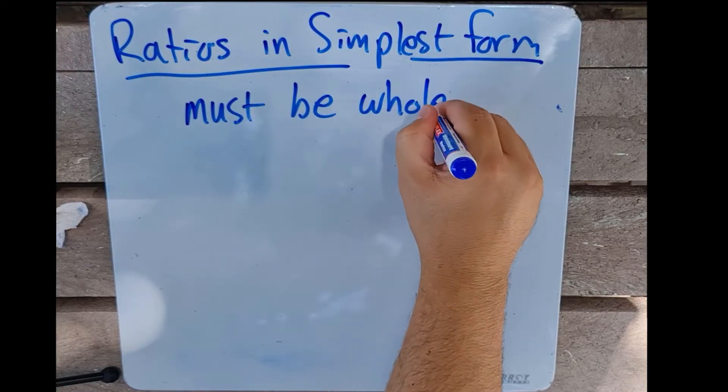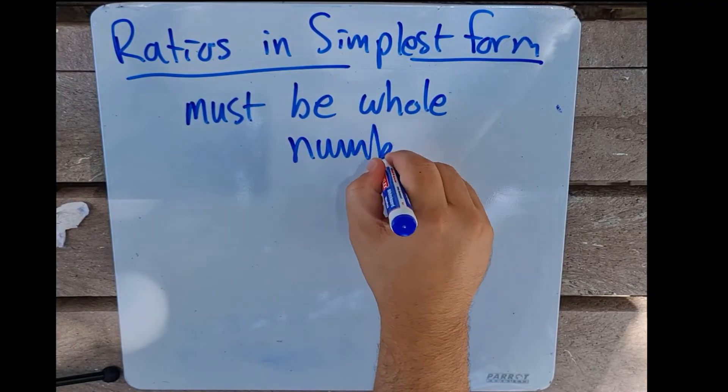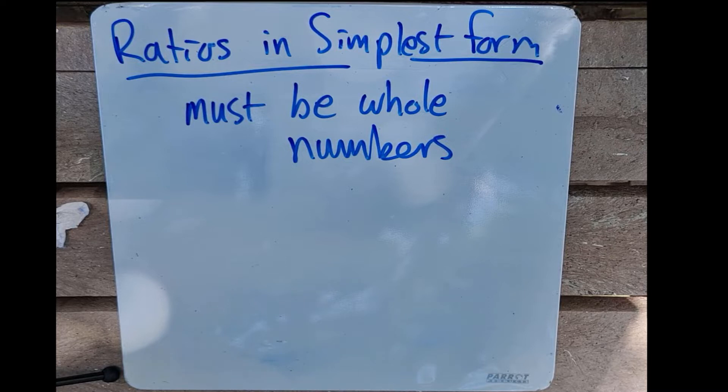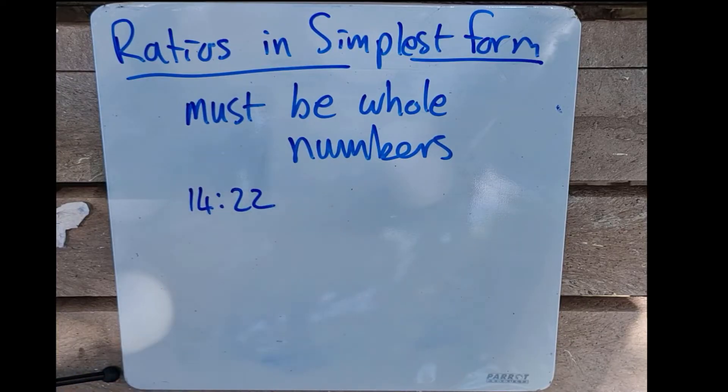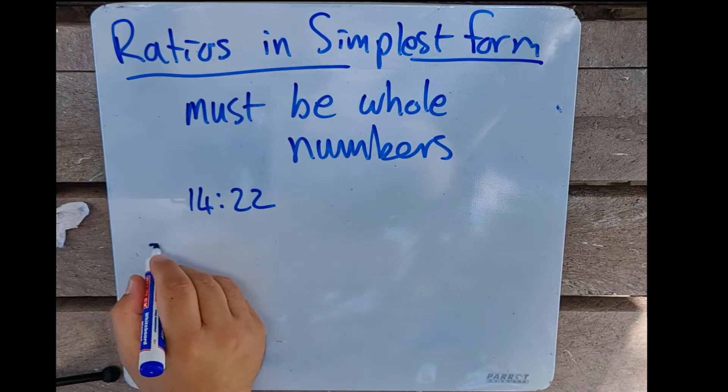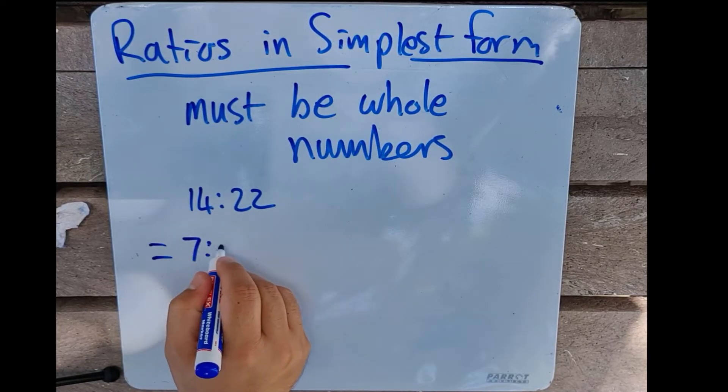It has to be whole numbers. So when we look at a ratio of 14 to 22 and we look at it in its simplest format, this will end up being 7 to 11.